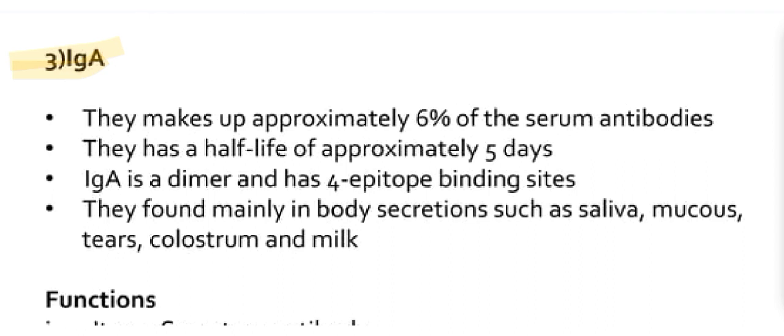IgA: They make up approximately 6% of serum antibodies. Their half-life is 5 days and it is a dimer and has 4 epitope binding sites. They are found mainly in body secretion such as saliva, mucus, tears, colostrum, and also milk.